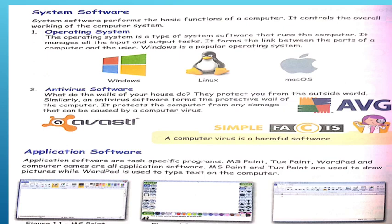Let's move on to the next topic: application software. We use system software to operate and handle computer parts. Application software is a task-specific program. MS Paint, TuxPaint, WordPad, and computer games are all examples of application software.